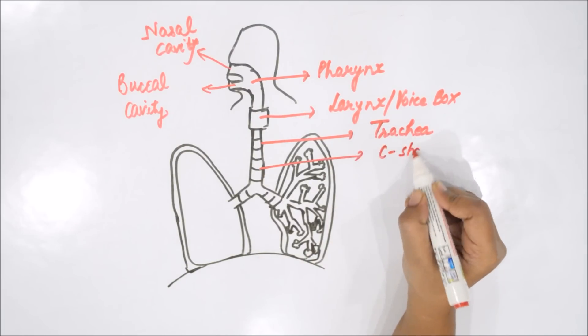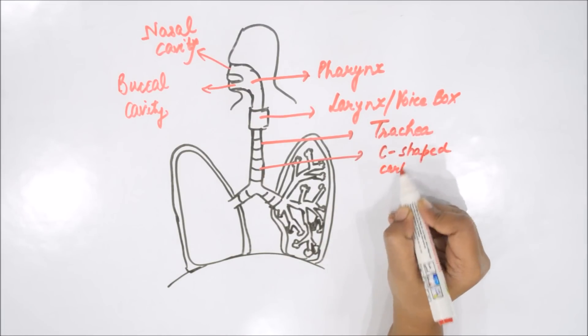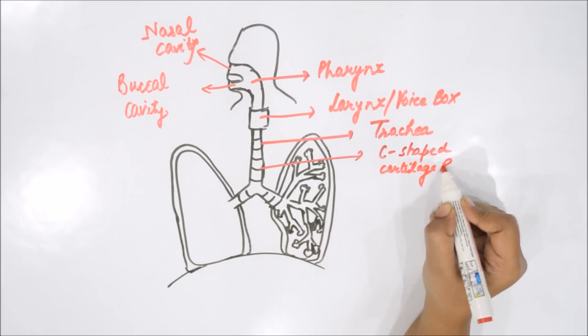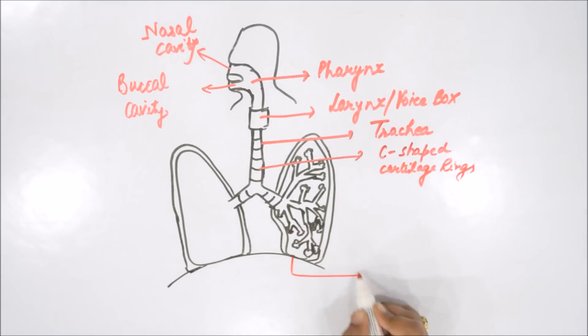Trachea - a long tube containing C-shaped cartilaginous rings to prevent the collapsing of trachea when there is less air in it. They divide into various divisions entering into each lung resting on diaphragm. Diaphragm is a muscular partition.